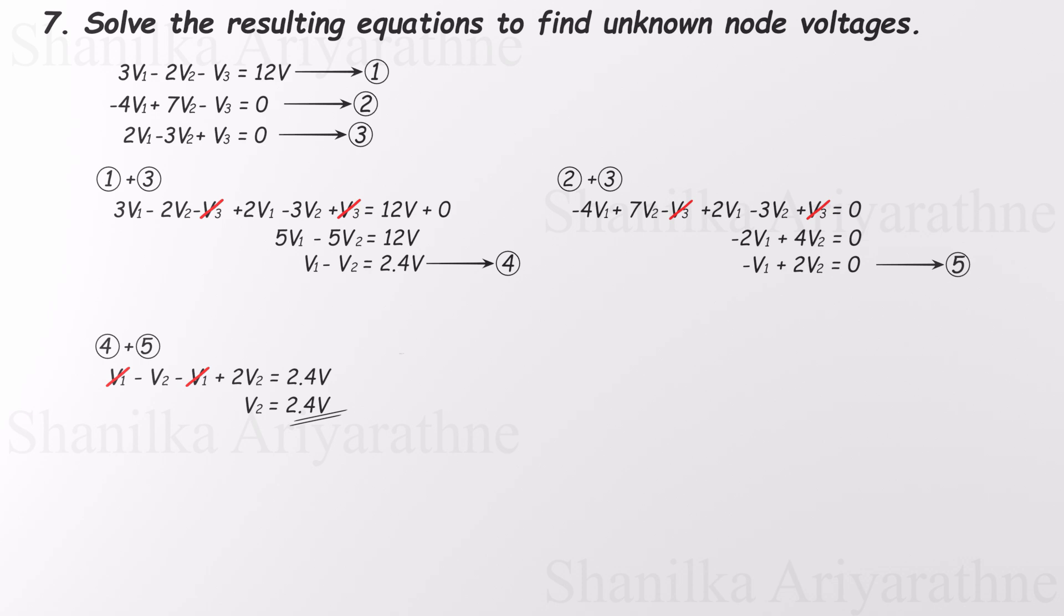That lets us solve directly for V2, and we get V2 equals 2.4 volts. With V2 in hand, we plug it back into either equation 4 or equation 5 to find V1. And that gives us V1 equals 4.8 volts.